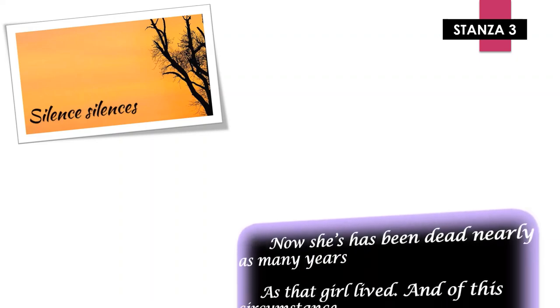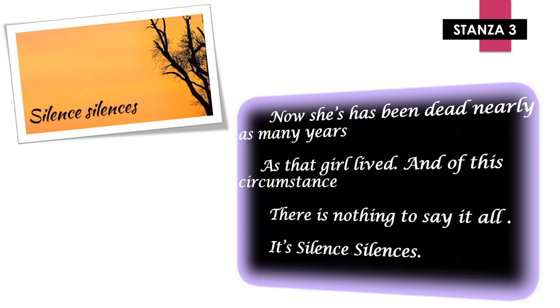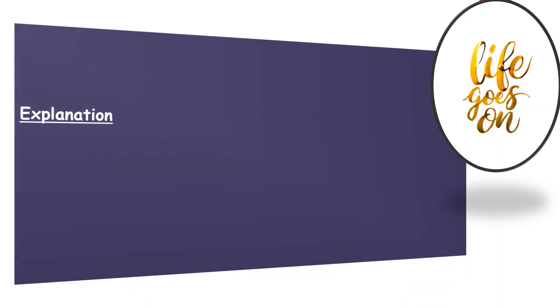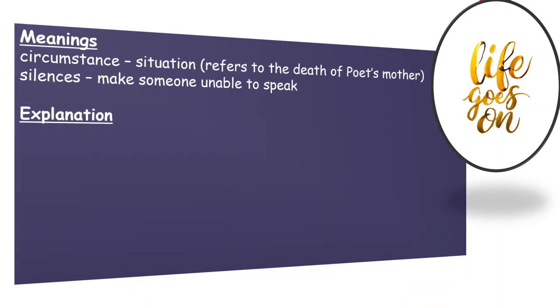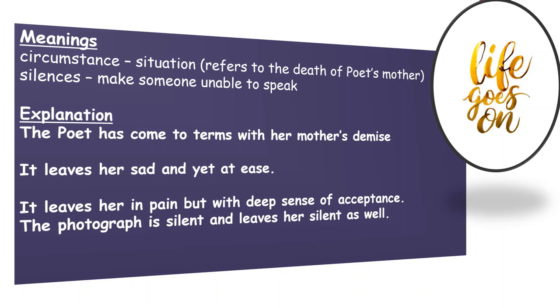Moving on to the third and last stanza: 'Now she has been dead nearly as many years as that girl lived, and of this circumstance there is nothing to say at all — it is silence silences.' The poet recalls that it is nearly twelve years since her mother passed away. She has no words to express her loss and pain. The painful silence of this circumstance has left her speechless and consumed with grief. The mother's death has created a deep void in her life, leaving her in pain but with a deep sense of acceptance. The photograph is silent and leaves her silent as well.